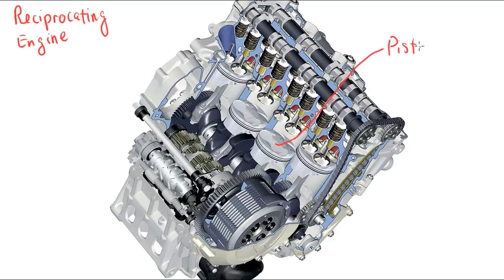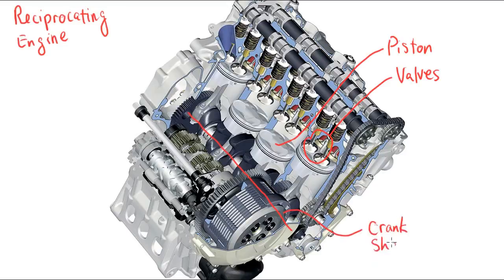So here we have a piston inside a cylinder, and there are several valves for each cylinder that control the inflow and outflow. Here is the crankshaft, which the pistons are connected to by connecting rods, which turns for power.